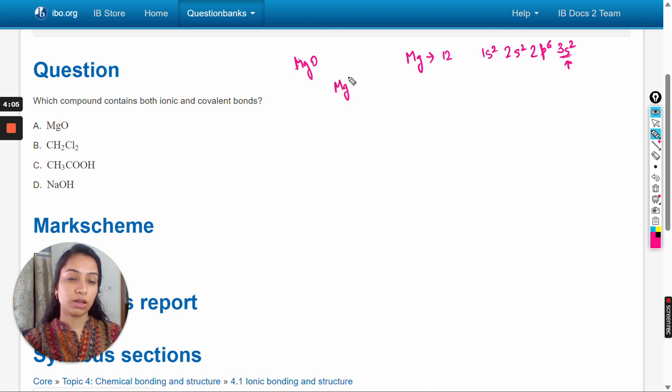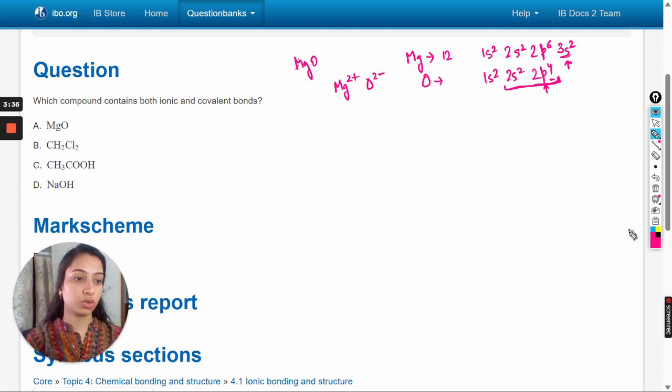Similarly, oxygen has configuration 1s2 2s2 2p4, so it can easily gain two electrons to complete its octet because there are total six valence electrons. On gaining two electrons there will be two negative charge. So there are ionic interactions, or we can say ionic bonding between these ions. Here is ionic bonding.